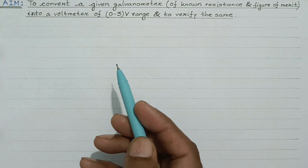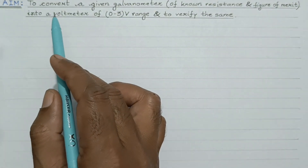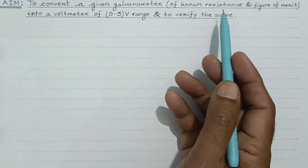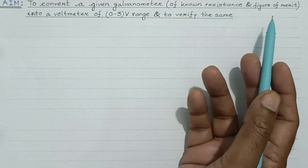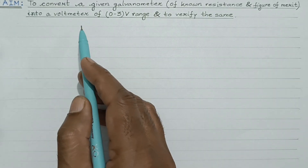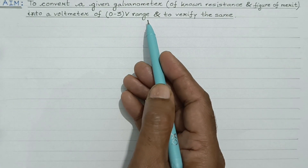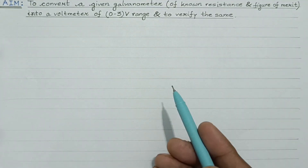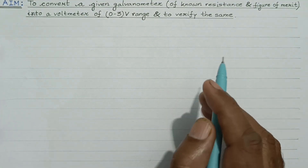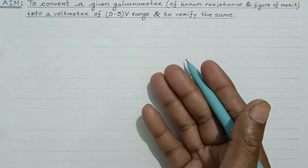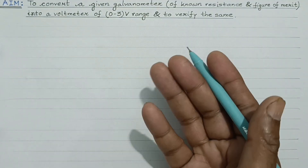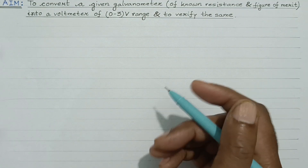In this particular experiment, we are supposed to convert a given galvanometer — whose resistance and figure of merit would be known to us — into a voltmeter of a given range, and then we will verify the same. Basically, a galvanometer can be converted into a voltmeter by connecting a high resistance wire.